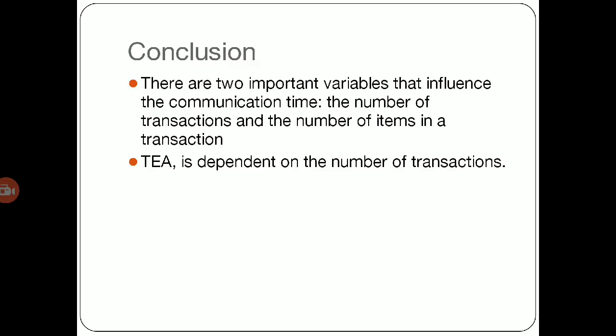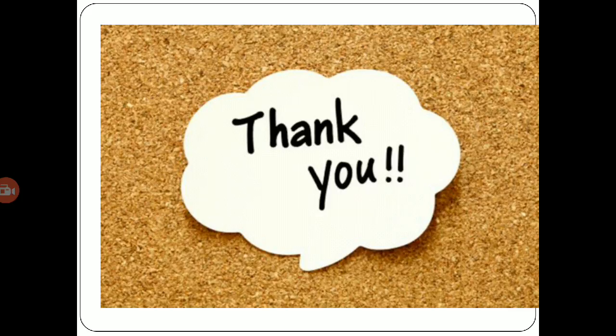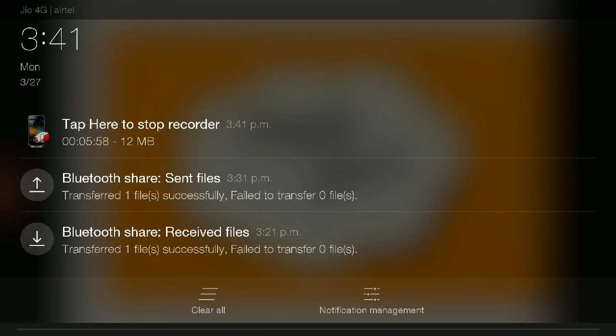From this above discussion, we can conclude that there are two important variables that influence the communication time: first, the number of transactions, and the number of items in a transaction. But the algorithm TEA focuses or depends on the number of transactions. Because of this, even if we pass a larger amount of data or a set of transactions, it will give us the result in an efficient and fast manner. Thank you.